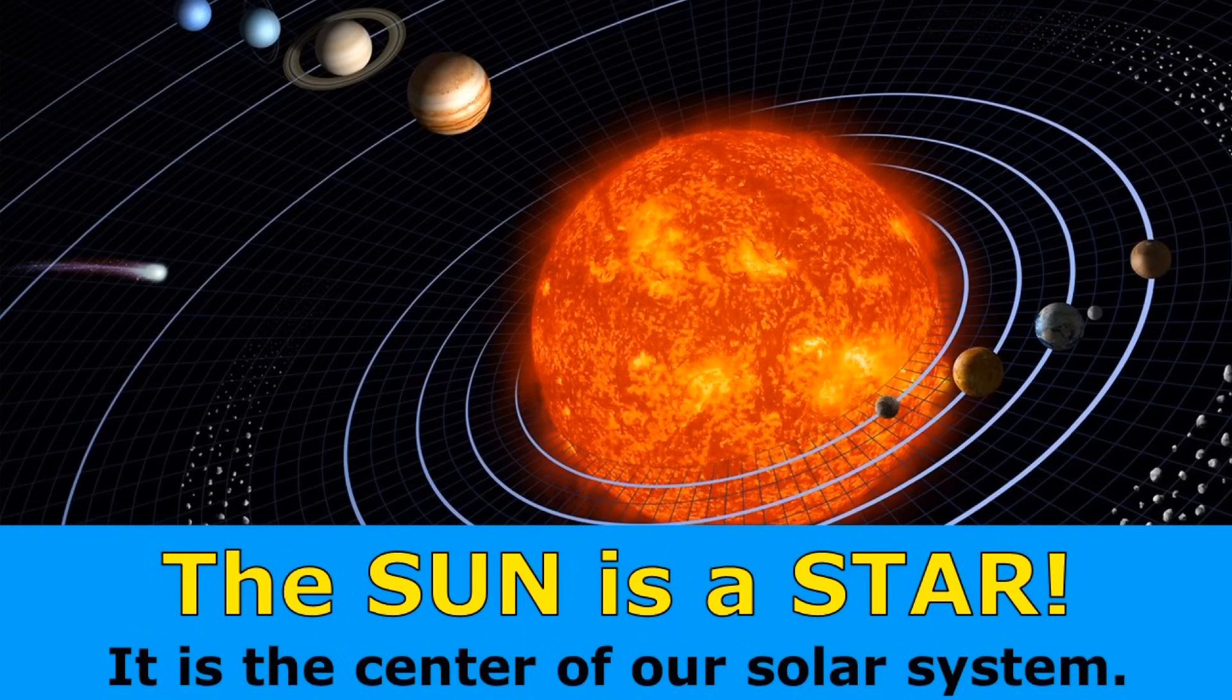The Sun is a star. It's the center of our solar system, and everything in our solar system, like planets, asteroids, and even comets, orbit the Sun.